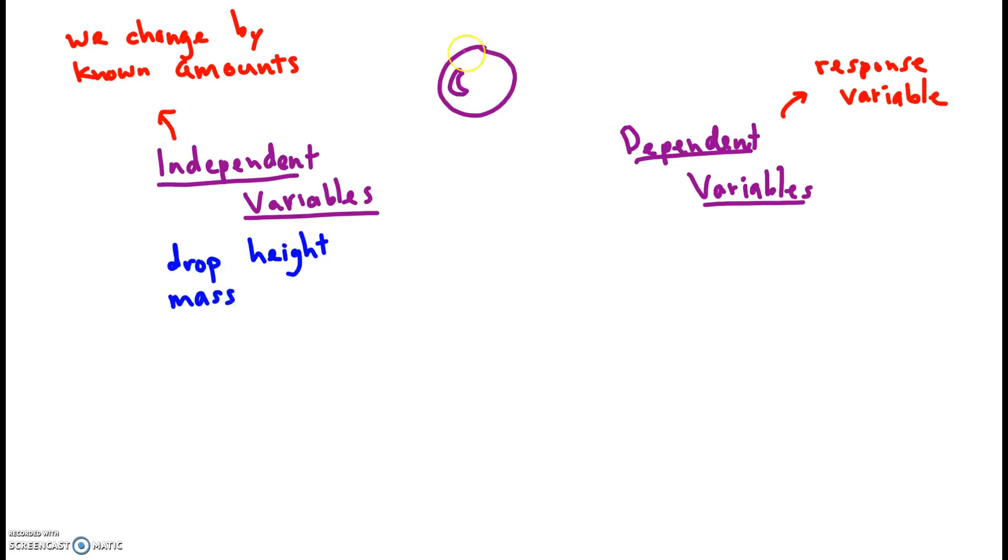We could change the mass. That would be tough, but maybe we could add duct tape on. Add more and more duct tape. Although we would have to add quite a bit to change the mass substantially. We could change, what else could we change about the independent variable, the bouncy ball?